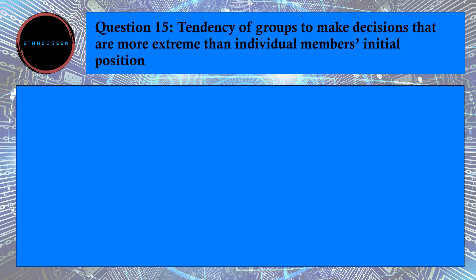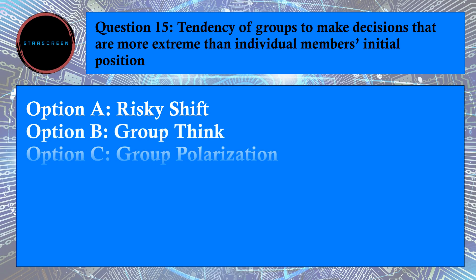Question number 15: Tendency of groups to make decisions that are more extreme than individual member's initial position? Option A, Risky Shift, Option B, Group Think, and Option C, Group Polarization. Correct answer is C, Group Polarization. For answer, refer to CAP715, Chapter 3, Paragraph number 2.5.5.